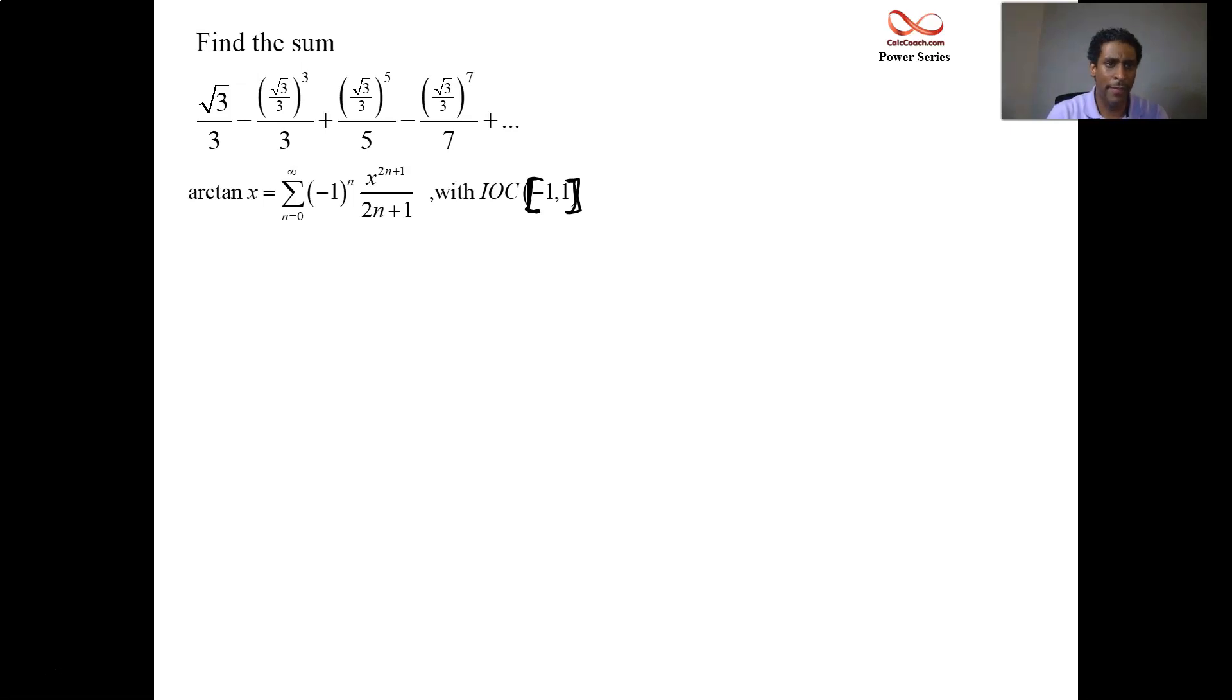What's the first few terms of that? It is x to start out, and then it's minus x cubed over 3, plus x fifth over 5, and on forever with that pattern. So it looks like we have the right-hand side with the root 3 over 3 plugged in.